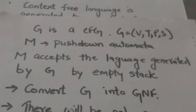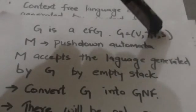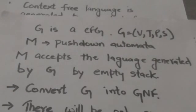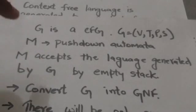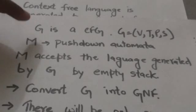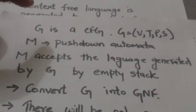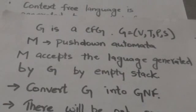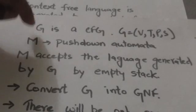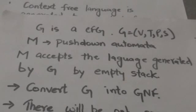Now suppose there is a context-free grammar G described by the quadruple V, T, P, S. We have to construct a pushdown automata M. M will accept the language generated by context-free grammar G by empty stack.